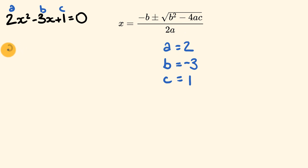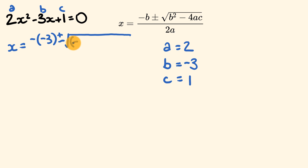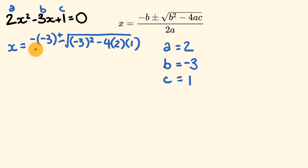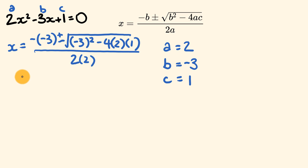So we have x is equal to: first off we have negative b, so negative negative 3. This is plus or minus the square root of b squared — we'll put that in as negative 3 squared — minus 4ac, so 4 times 2 times 1. And all of this goes over 2a, so 2 times 2. Now, negative negative 3 is equal to 3.